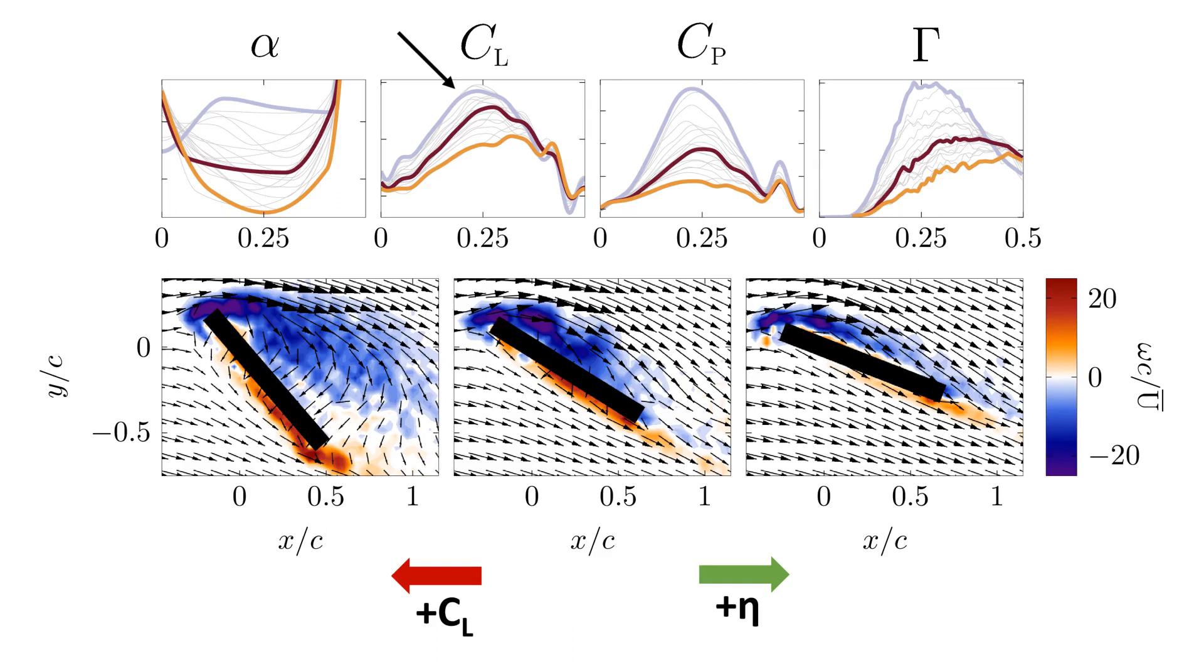From the leading edge vortex circulation, we can learn two things. One is, for higher lift production we produce a leading edge vortex of higher circulation. Also, the more efficient a kinematic is, the later in the cycle the maximum of the circulation occurs.